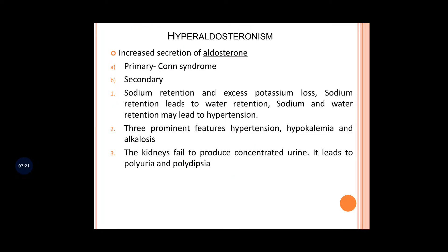Now, hyperaldosteronism — Cushing syndrome was due to excess glucocorticoid, whereas here it is increased secretion of aldosterone. There are primary and secondary forms; the primary one is known as Conn's syndrome. With excess aldosterone, there will be sodium retention and excess potassium loss, because sodium is more reabsorbed and potassium is more excreted. Sodium retention leads to water retention, and both may lead to hypertension.